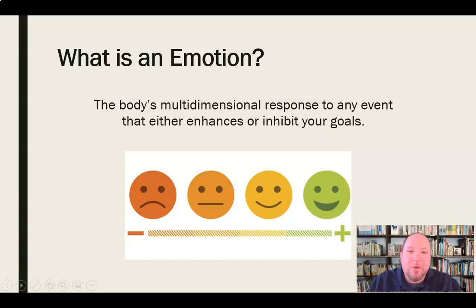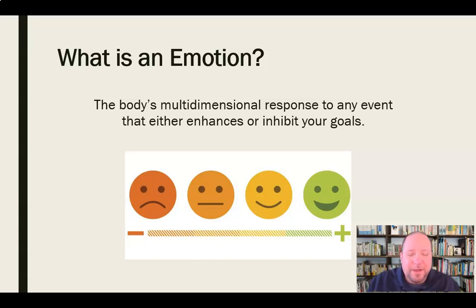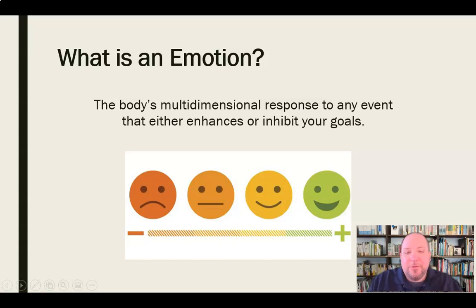An emotion is the body's multidimensional response to any event that either enhances or inhibits your goals. There's a lot to that. Your body's multidimensional response means we react in a variety of different ways to any event — meaning there is a triggering event involved in emotion — that either enhances or inhibits your goals. So it either helps you achieve something you're trying to achieve, or it keeps you from doing so.